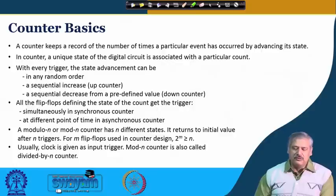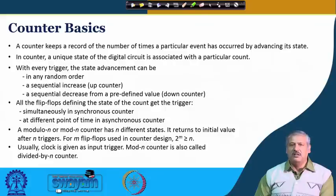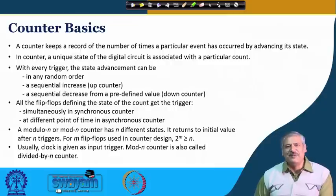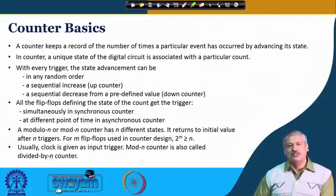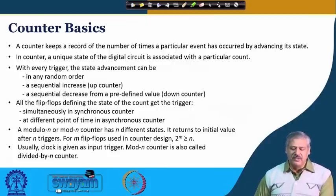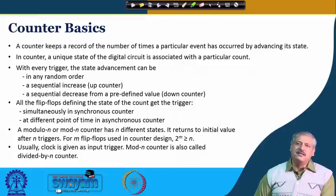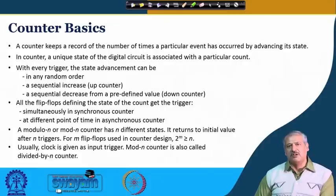So, what is a counter? A counter keeps record of the number of times a particular event has occurred — it keeps a count. The counter circuit with memory elements in it advances its state one by one, and one particular state is associated with one specific count. So there is a uniqueness — a specific state is associated with one count.